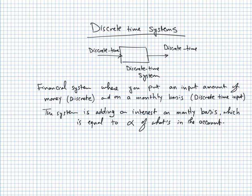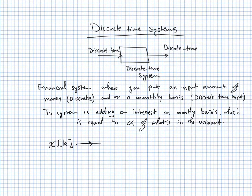We are concentrating on the fact that things happen at discrete times. We put money in at time k, so the input is x(k) — the amount of money put in at time k. The interest is added after one month, so the system always delays by one sample. Let sample time be T (one month), so we have a delay of value T.